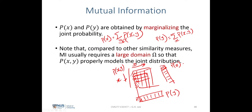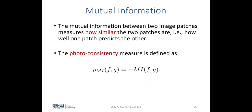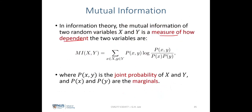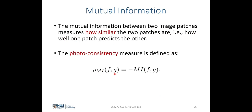After computing the marginal probabilities, we can then plug them into the mutual information function given by this equation to get the photoconsistency measure as defined earlier.